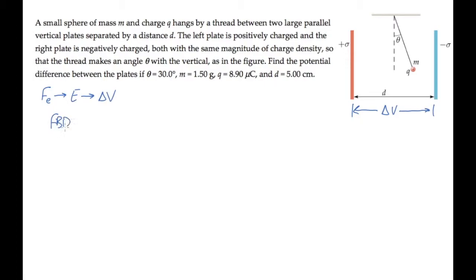Let's look first at a free body diagram for the hanging sphere. Three forces act on it: the weight is straight down, the tension T acts along the direction of the thread, and the electric force is directed to the right in the same direction as the electric field, which goes from the positive plate to the negative plate.